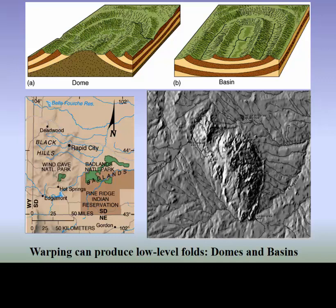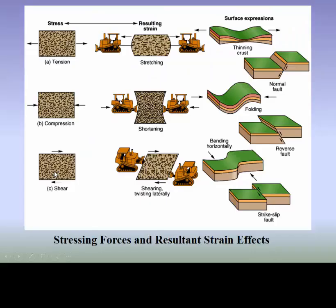We can see the different types of warping. We've got domes and basins as a result, because you can see the vegetation or vegetation grows on top compared to these different strata — our dome and our basin. We can see a good example of this out in South Dakota out near Rapid City, the Badlands National Park, over where Mount Rushmore is.